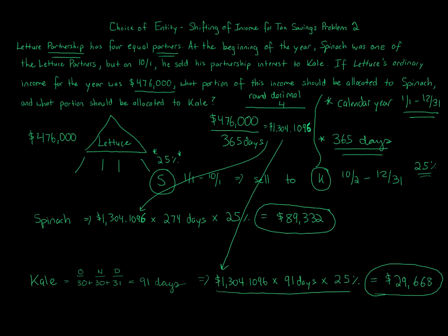To summarize: when ownership percentages change during the year, we use a daily allocation approach, assuming 365 days, calculate a daily income amount, count each owner's days, and multiply by their ownership percentage. This shows exactly how income is allocated when a partner's interest changes or a new partner joins during the year.